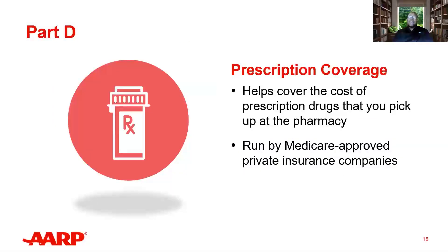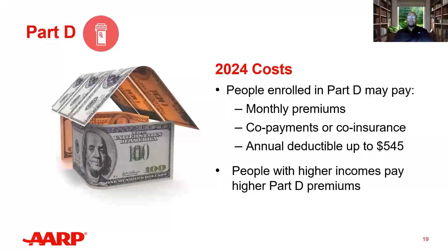Part D is your prescription drug coverage — D for drugs. Part D is a relatively new program, around since 2006. Like Part C, these plans are offered by private insurance companies but must be approved by Medicare, and they help cover the cost of prescriptions picked up at your pharmacy. Premiums vary depending on the plan and service area, and there will most likely be a copay or coinsurance. The annual deductible can be up to $545. People with higher incomes will also pay a higher Part D premium.